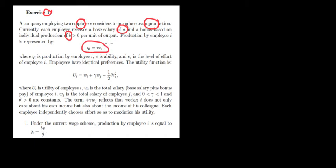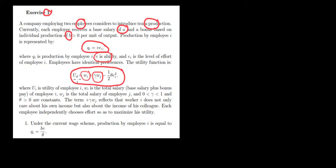The quantity produced by an individual depends on the effort, where V is the ability of the individual and E is the effort. Now we have the utility function of one individual. It depends positively on the wage — how much the individual earns — plus gamma times the wage of the other person. So he cares positively about his coworker: if the coworker receives more money, this individual is happier.